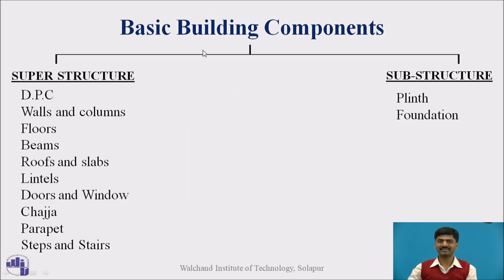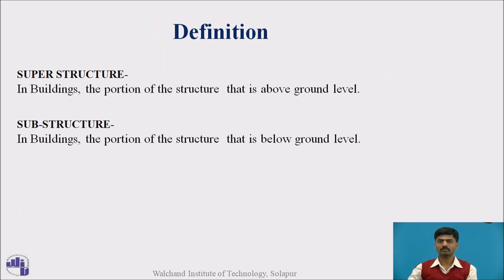These are the basic building components. There are two types: one is superstructure, another one is substructure. In superstructure, the components include DPC (damp proof course), walls, columns, beams, etc. In substructure, plinth and foundation are present. The portion of the structure or building which is above the ground level is called superstructure, and if it is below the ground level, we call that substructure.